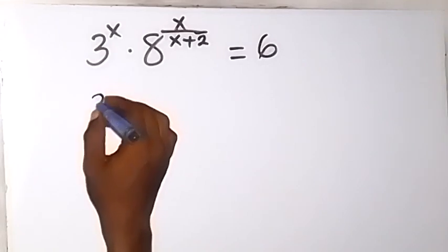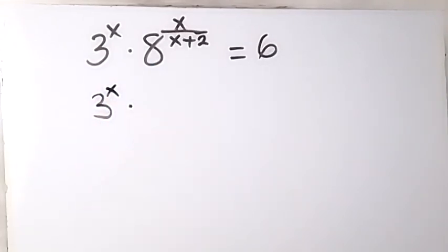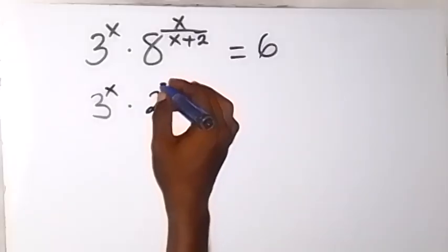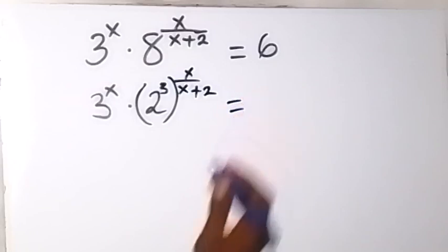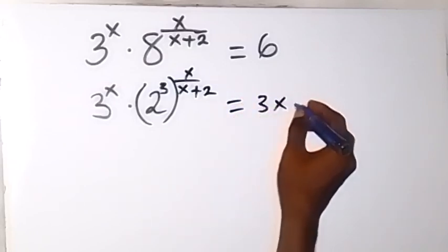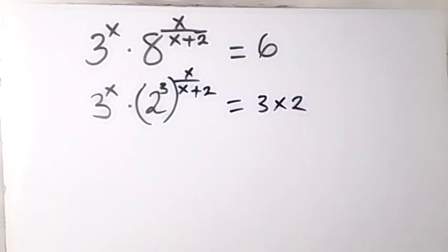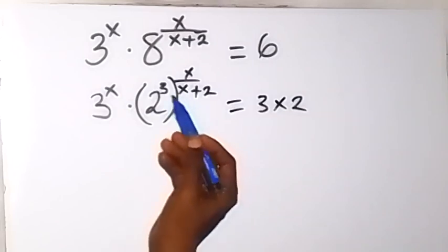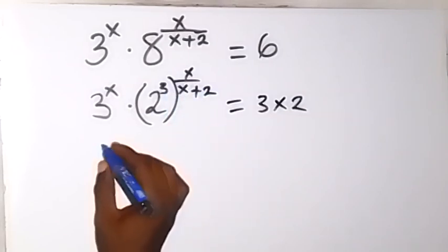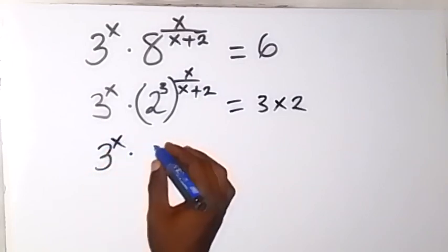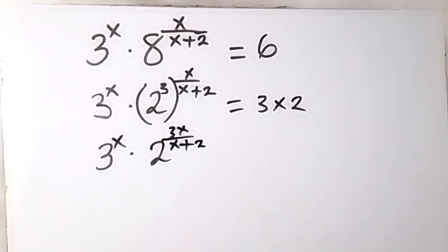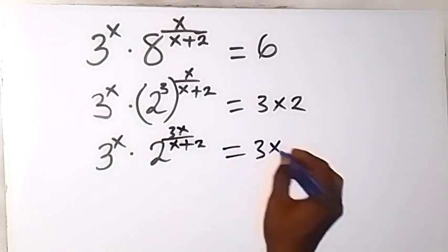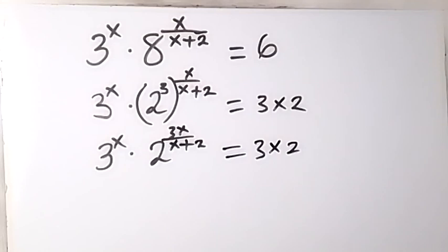We can see this is 3 raised to power x times 8 to base 2. Now we have 2 raised to power 3, which is raised to power x over x plus 2, then equals 6 here. We can break 6 as 3 times 2, and from the law of indices, this power can multiply, giving us 3 raised to power x times 2 raised to power 3x over x plus 2, equals 3 times 2.